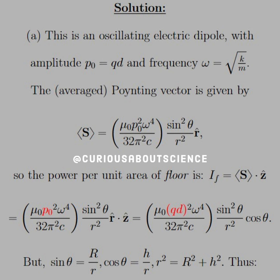The power per unit area on the floor is I floor equal to this average vector dotted with the Z hat direction. We know that R dot Z leads to a cosine. From our diagram, sine theta equals big R over little R, and cosine equals H over R, where little R squared equals big R squared plus H squared.